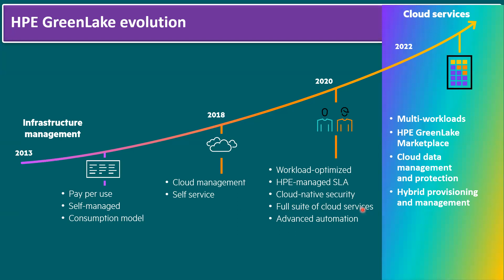We also have advanced automation. Through the self-service portal, it's automatically integrated with automation tools like Ansible, vRealize Orchestrator, HPE Puppet, and others — all integrated by default with the HPE GreenLake self-service portal.